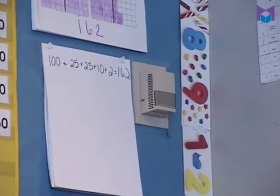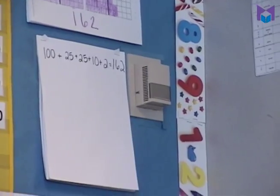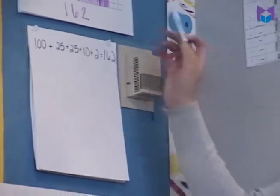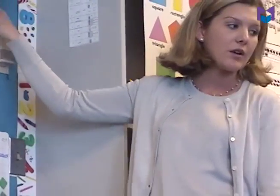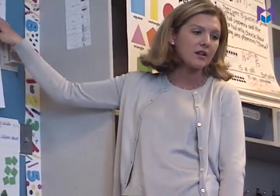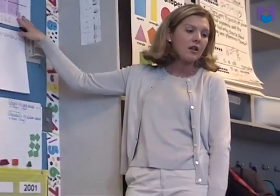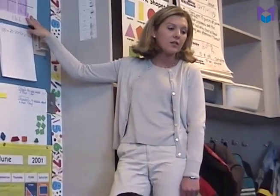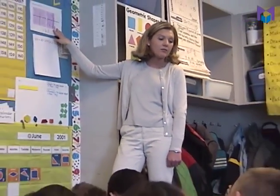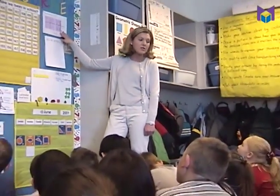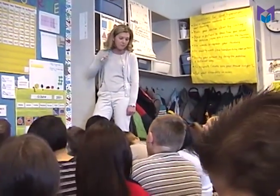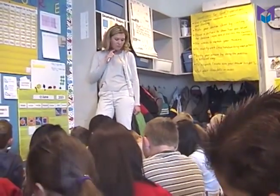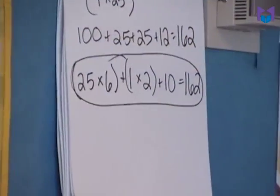I would like you to think for one minute about what you see visually when you look at the number 162 represented on our chart, and see if you can develop an equation that represents your thinking. Brian, what did you see?